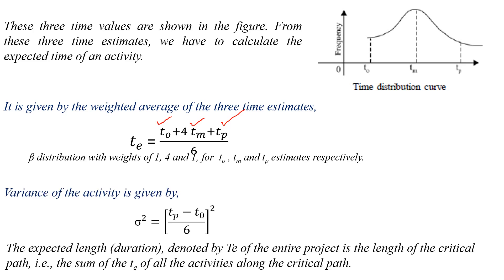The variance of the activity is sigma squared = ((Tp − T0) / 6)². The expected length of the project, denoted by Te, is the length of the critical path — that is, the summation of Te for all activities along the critical path: Te = Te1 + Te2 + ... and so on.